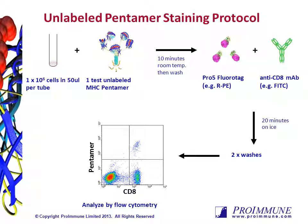The unlabelled pentamer staining protocol contains no additional steps — the only difference being that the cells are labelled with the unlabelled pentamer, and the fluorotag is added at the same time as the antibody step. Using unlabelled pentamers also allows better control over the staining, as both pentamer and fluorotag concentration can be titrated independently. The unlabelled pentamer can also be stored frozen for long-term usage.